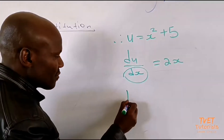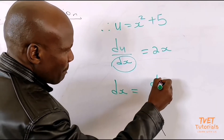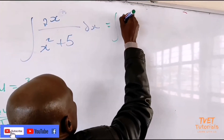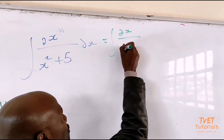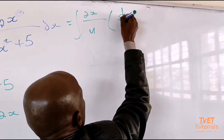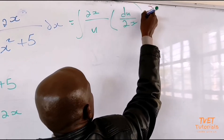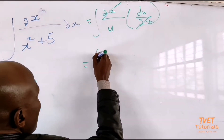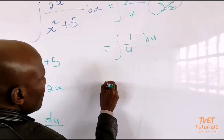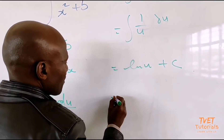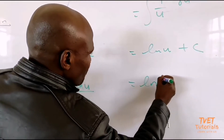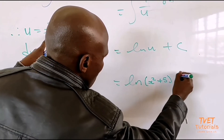You cross multiply: dx = du / 2x. Substituting, the 2x in the numerator and the 2x from dx cancel. We are left with ∫(1/u) du. The integral of 1/u is ln u + c. Then substitute back: u = x² + 5. So the final answer is ln(x² + 5) + c.